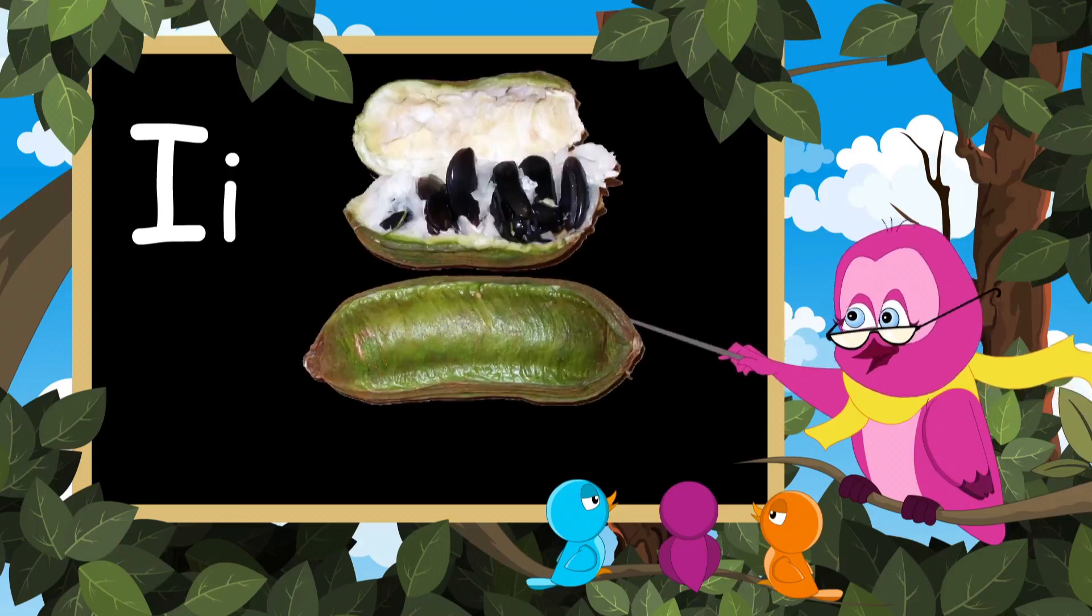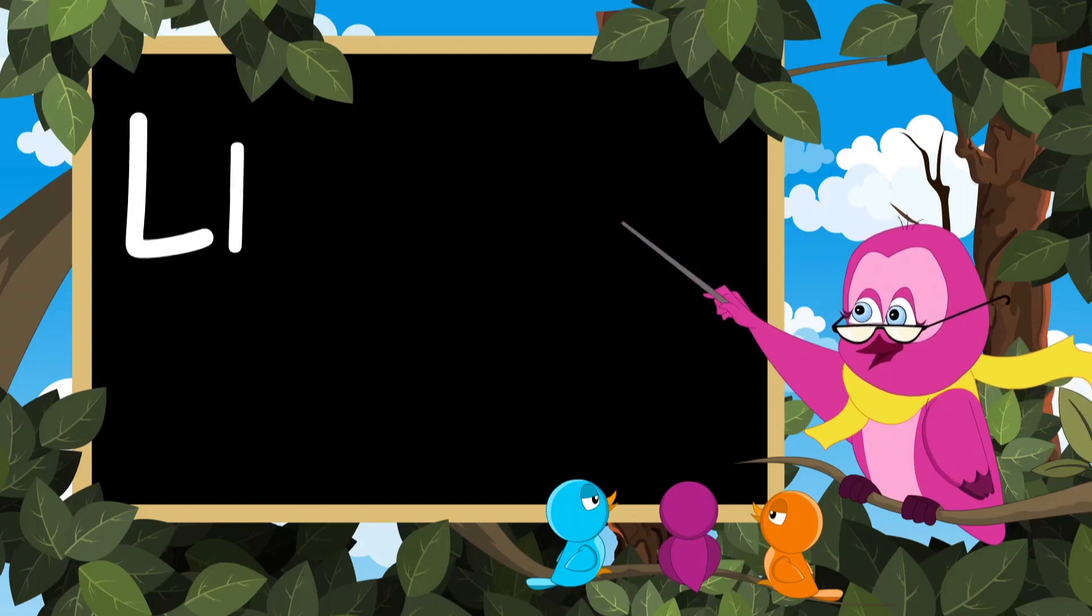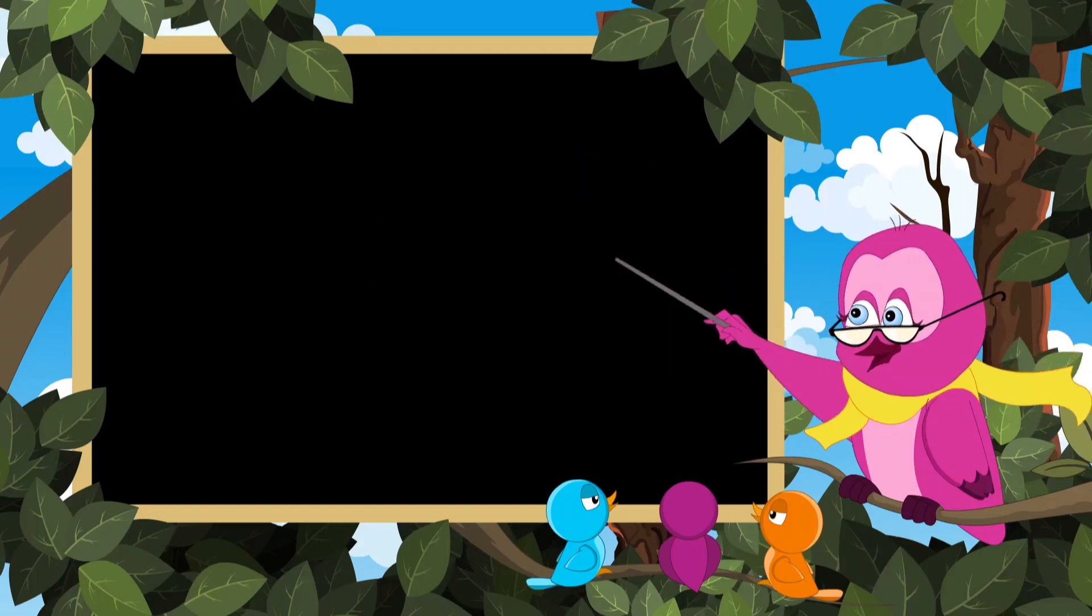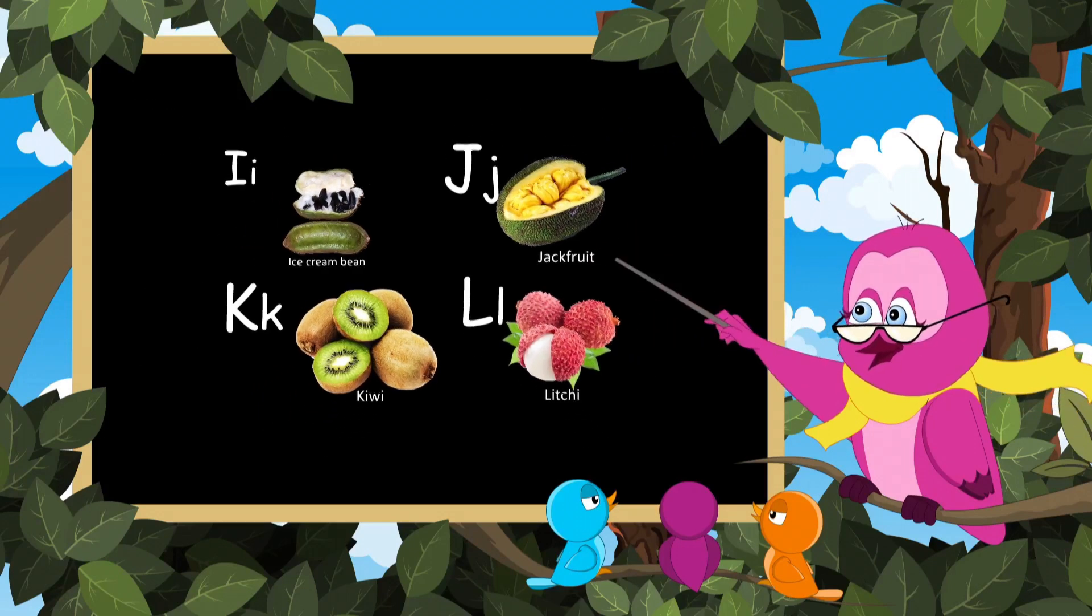I for ice cream bean, J for jackfruit, K for kiwi, L for litchi. These are all for fruits, sing with me.